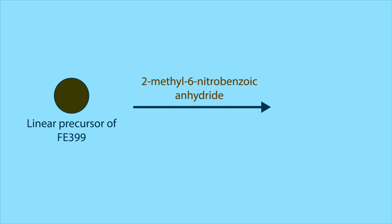To do this, they first synthetically designed the linear precursor of Fe399. Then, using their unique synthetic reagent called 2-methyl-6-nitrobenzoic anhydride, the research team synthesized Fe399 through a process called Shina lactamization.